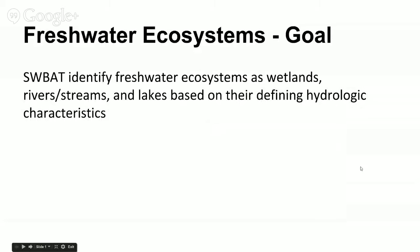This is just a very quick overview of the three main types of freshwater ecosystems. Our goal is that we will be able to identify the freshwater ecosystems as wetlands, rivers and streams, and lakes based on their defining hydrologic characteristics — that just means the characteristics of the water that makes them.